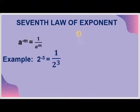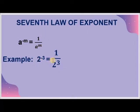The 7th law of exponent is a raised to the power minus m is equal to 1 upon a raised to the power m. When the power is negative, to make the power positive we reciprocate it. For example, 2 raised to the power minus 3 is equal to 1 upon 2 raised to the power 3. We have reciprocated and now the power is positive. This is all about this part.